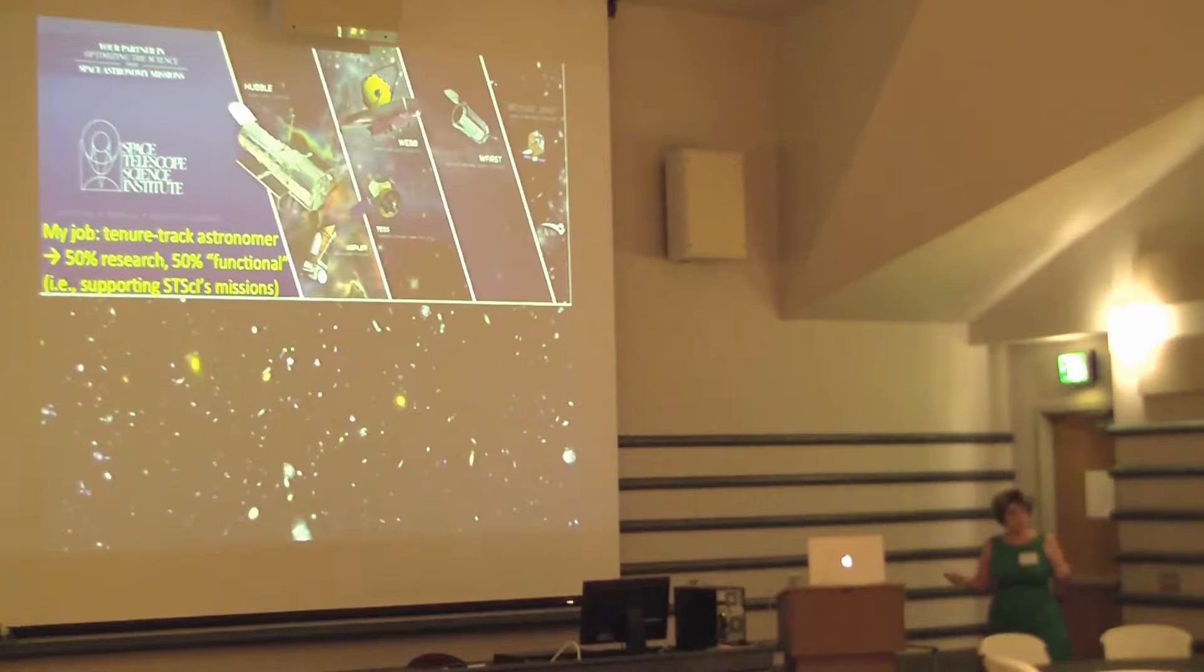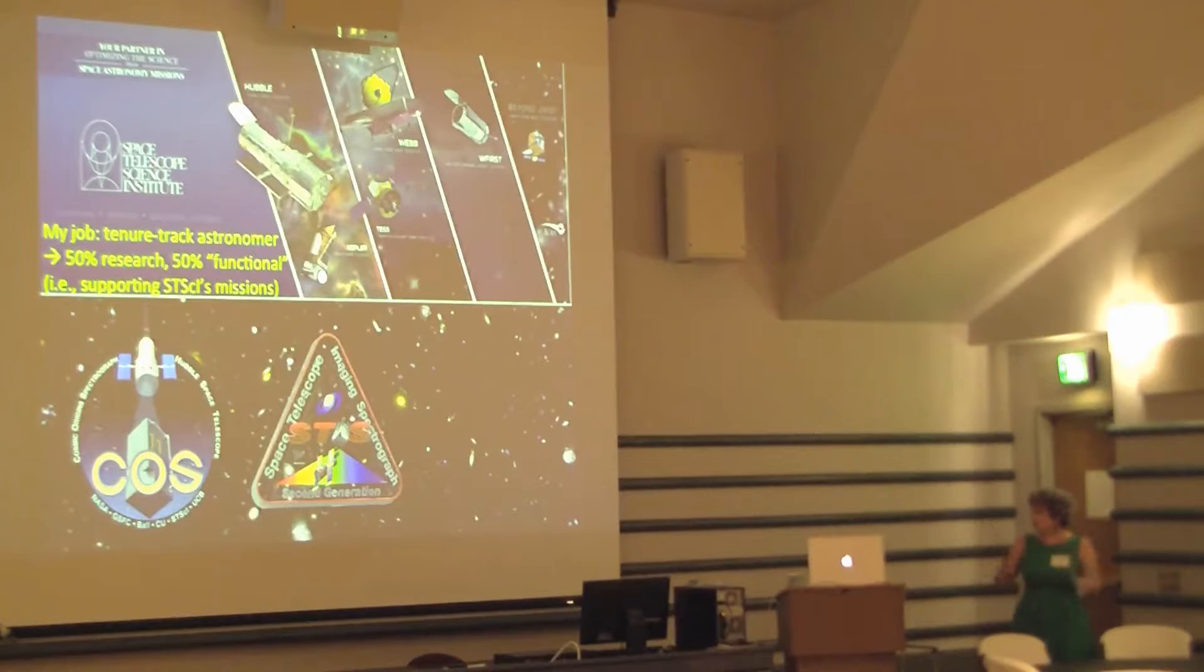So my position is I'm a tenure-track astronomer. This is basically completely the same as we can make it to being a tenure-track faculty member at a university, except because we don't have students, we don't teach classes. 50% of my time is still spent doing research, but the other 50% of my time is what we call functional work. And it's basically supporting these different missions.